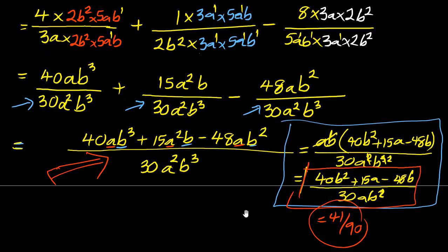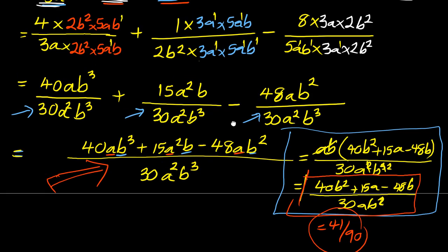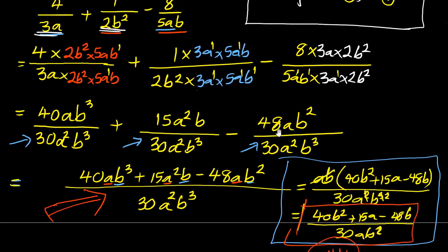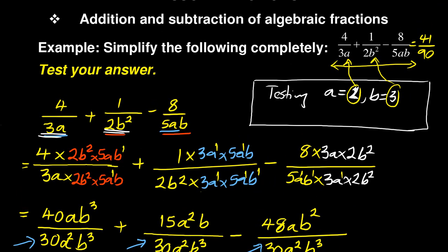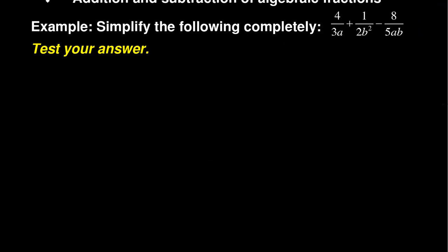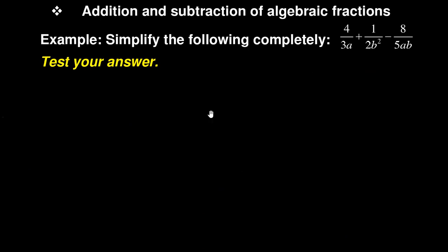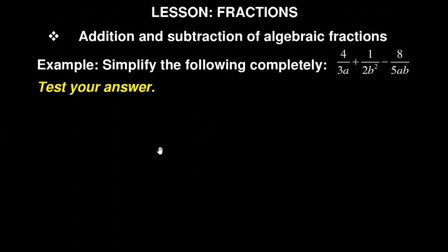So this is a way whereby you can solve a fraction, and after solving it you can even prove that it's correct. This is one way in which you could have solved this. But I can actually show you the second version of how you can work this out. So you're having your 4 over 3a — that is method 2 now.